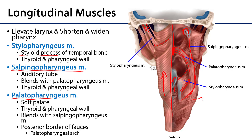So the longitudinal muscles elevate the larynx and shorten and widen the pharynx. One other thing to note is that the palatopharyngeus muscle forms the posterior border of the fauces — invested by mucosa, it becomes the palatopharyngeal fold, and the two folds together comprise the palatopharyngeal arch, which marks the posterior border of the fauces within the oropharynx.